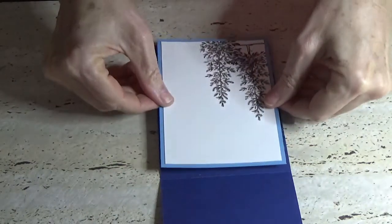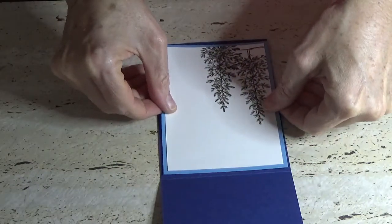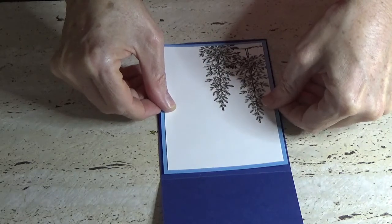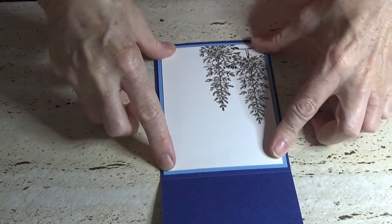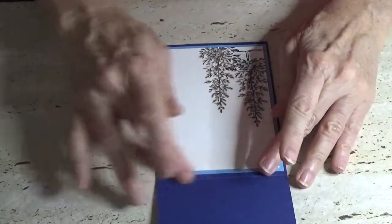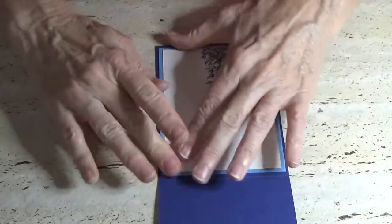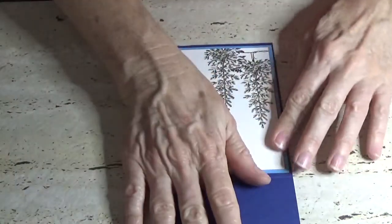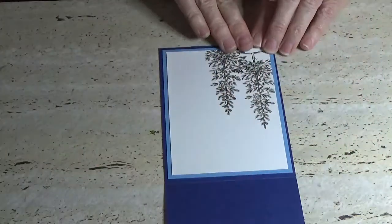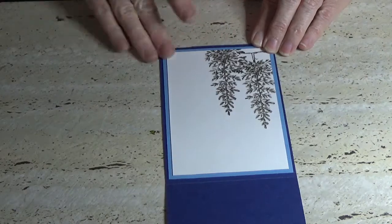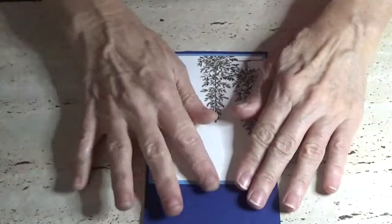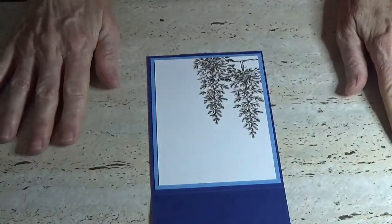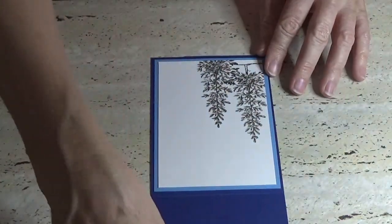I'm going to glue that on the inside of our card and that'll be the inside done. Just popping that on the inside, just eyeball it to see that you've got it as straight as possible. It's not going to be perfect. So then we've got a nice layered piece on the inside with the trees.